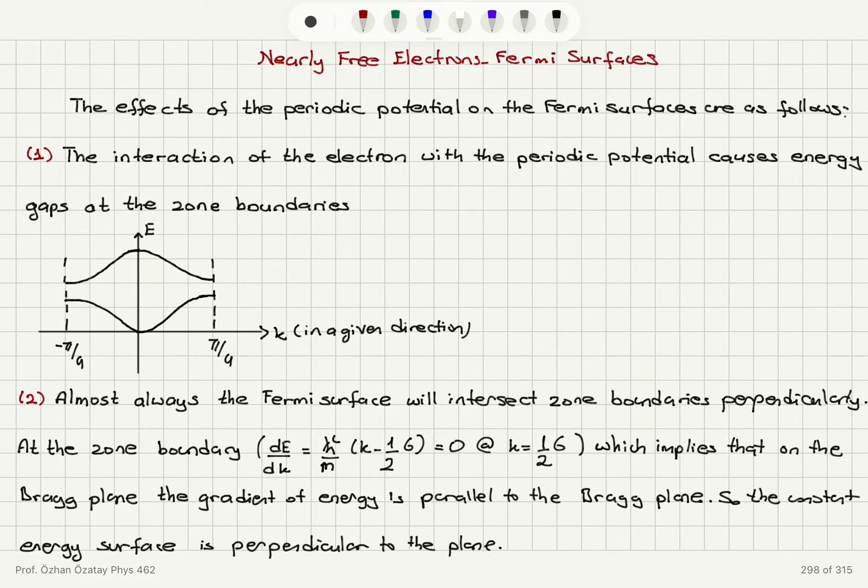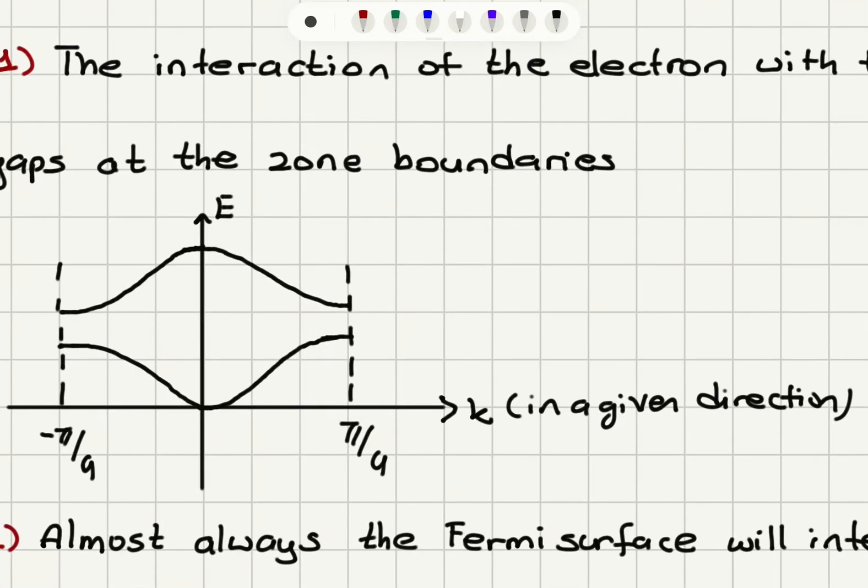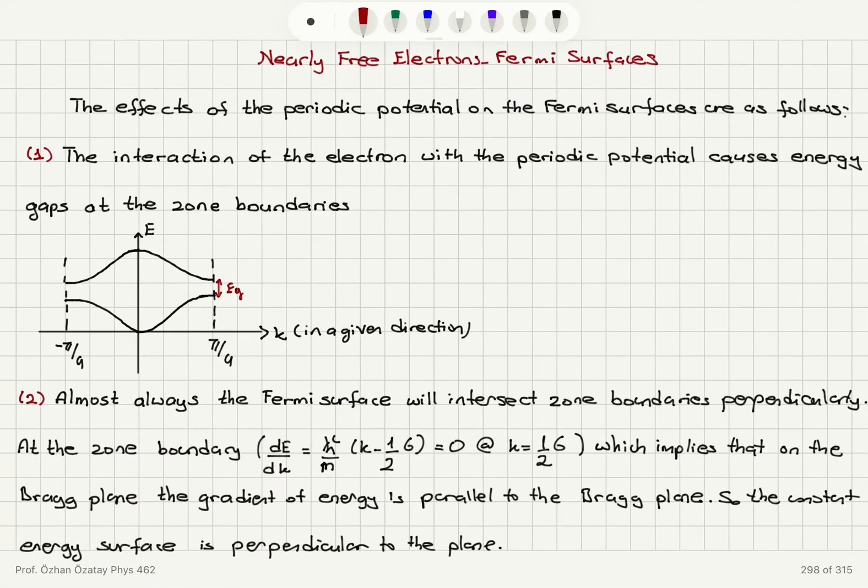The first one is the interaction of the electron with the periodic potential causes energy gaps at the zone boundaries. So remember if you look at the dispersion energy relationship, we have these energy gaps at the zone boundaries. This is our energy gap and this was due to standing wave solutions at the Brillouin zone boundaries. So that's a Bragg plane and the Bragg reflection condition is satisfied.